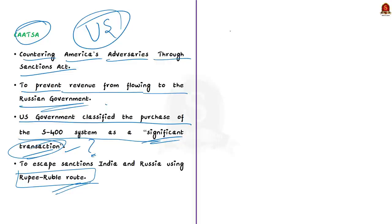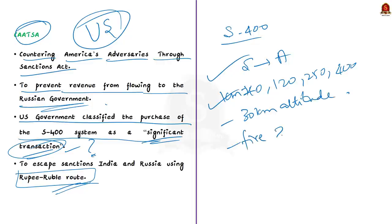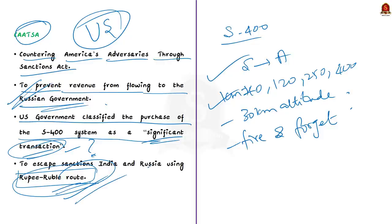The US government classified the purchase of the S-400 system as a significant transaction, meaning India's purchase could invite sanctions. To avoid sanctions, India and Russia worked out payment through a rupee-ruble exchange — an alternative payment mechanism to settle dues in rupees instead of dollars or euros. Recap: S-400 is a surface-to-air missile system with four missile types ranging up to 400 km, fire-and-forget capability, and CAATSA aims to prevent revenue flowing to Russia.